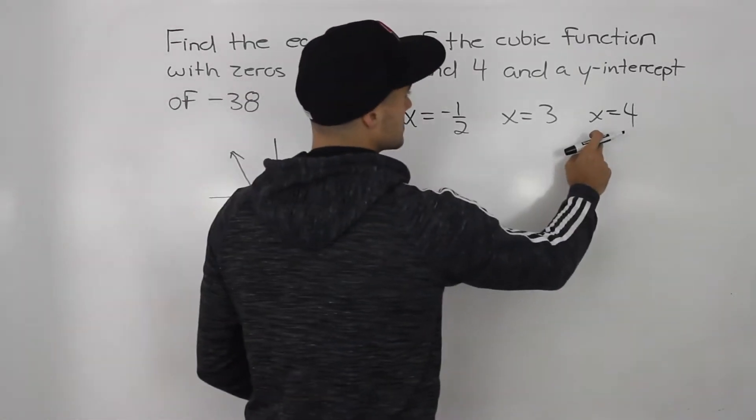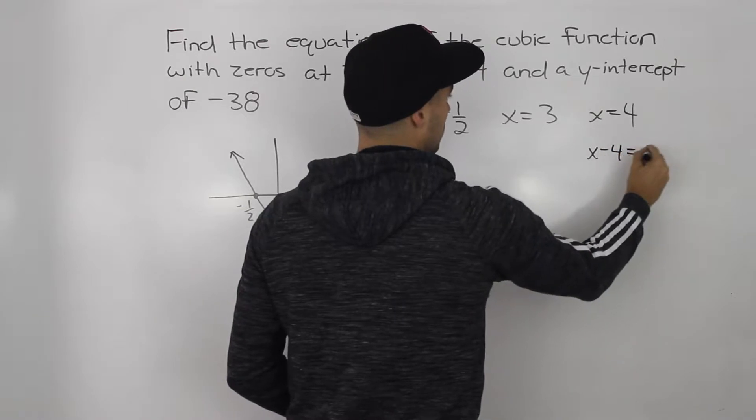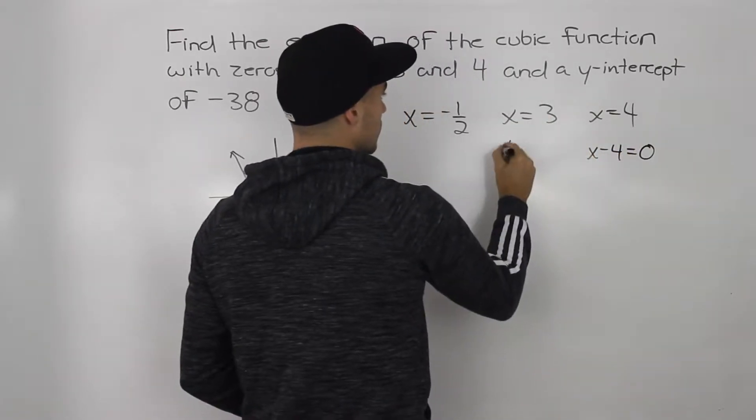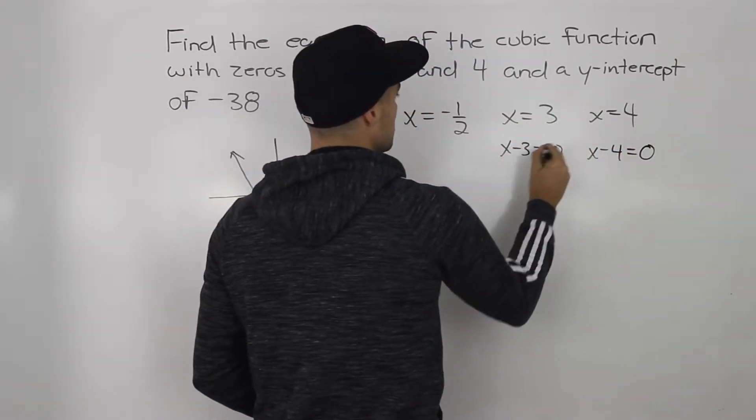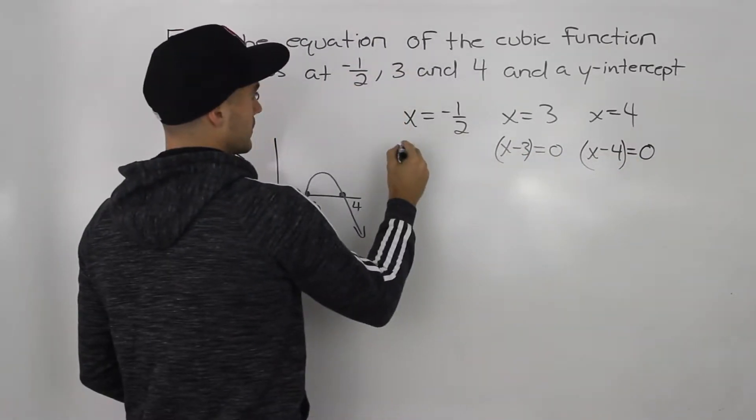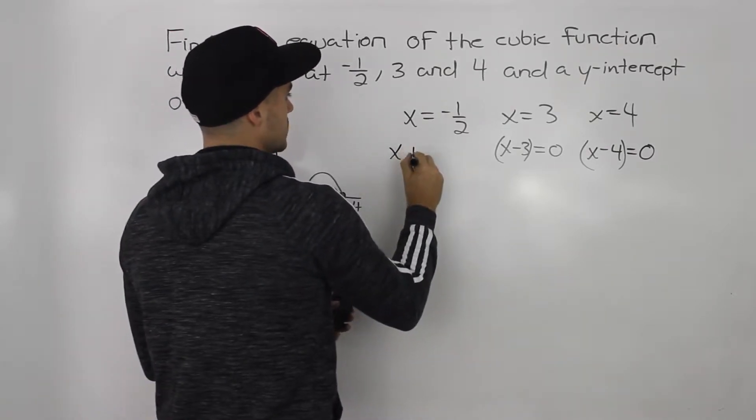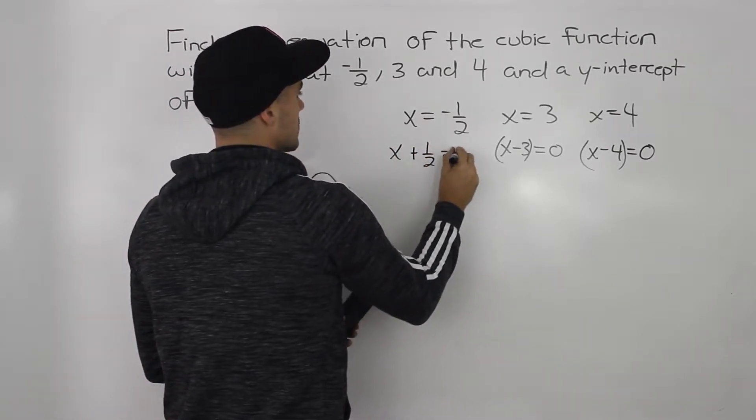So starting with this x equals four, what we can do, bring this four over, so we'd have x minus four equals zero. Bring this three over, x minus three equals zero. So these are two factors, and then we can bring this one-half over, which would be x plus one-half is equal to zero.